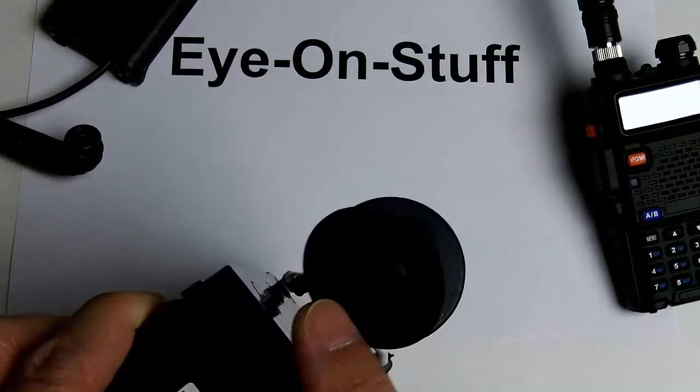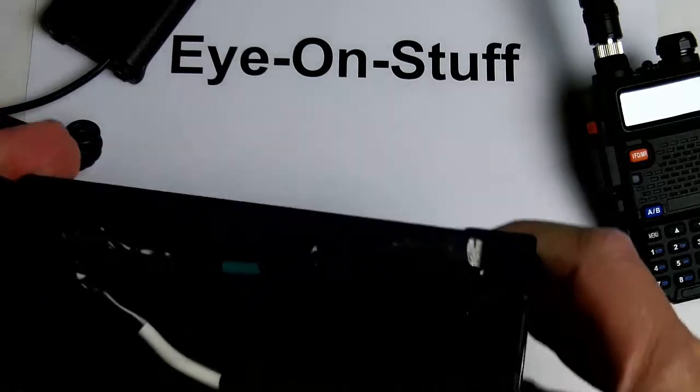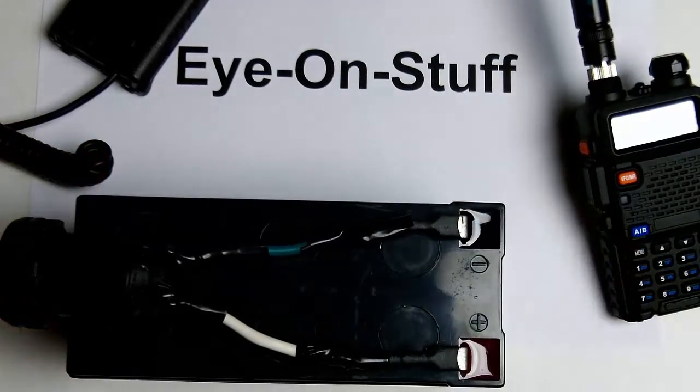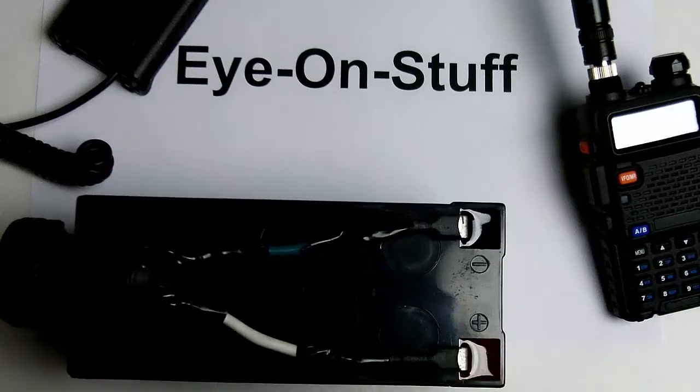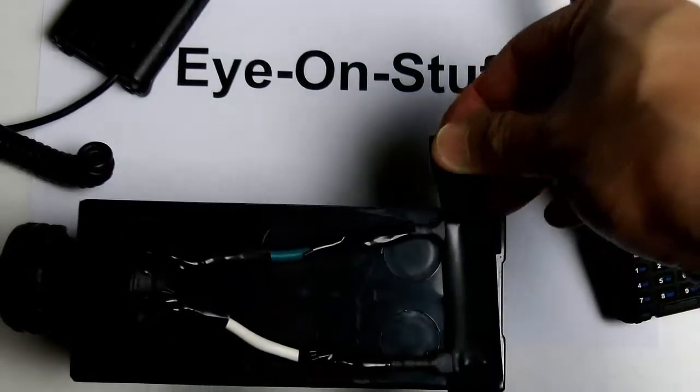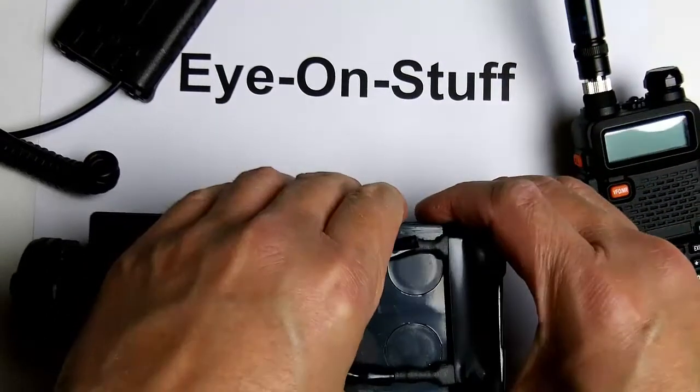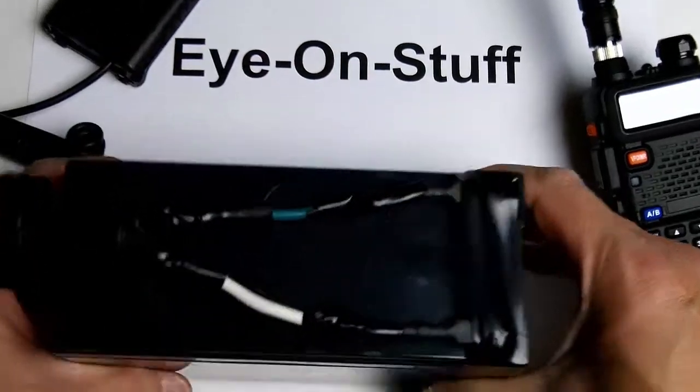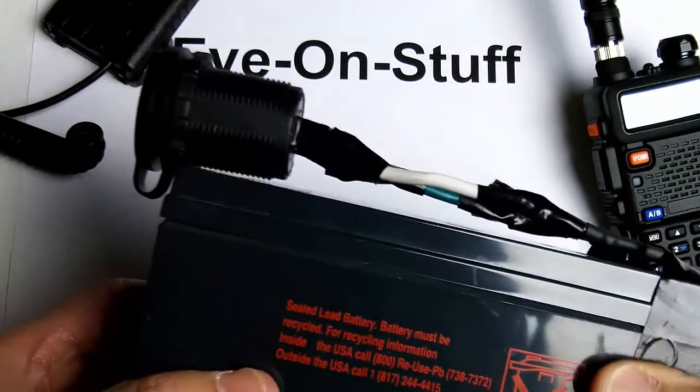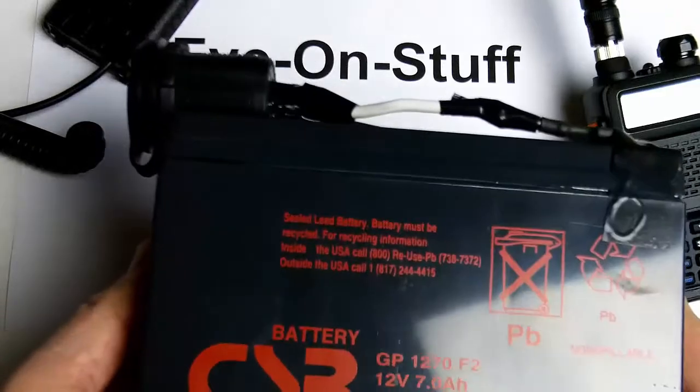And of course, to make it a little safer, put a piece of tape to cover up the terminals so nothing can accidentally touch it and short it out. So that's really basic, really easy to get some 12-volt backup power.